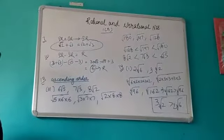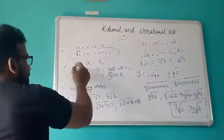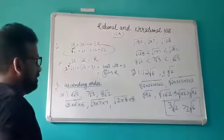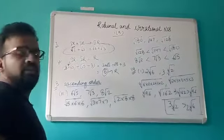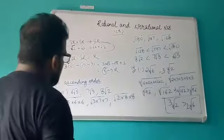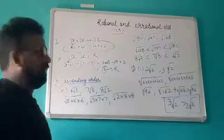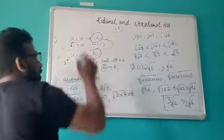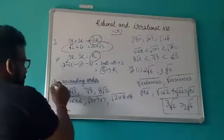Next, it is asked to write two irrational numbers such that their difference is a rational number. I have taken one irrational number as 3 + √5 and another as √5 − 3. When you solve it, you get 3 + 3 = 6, which is a rational number. You can choose numbers based on what comes to mind, as long as you remember what result you need and how to perform mathematical operations on irrational numbers.